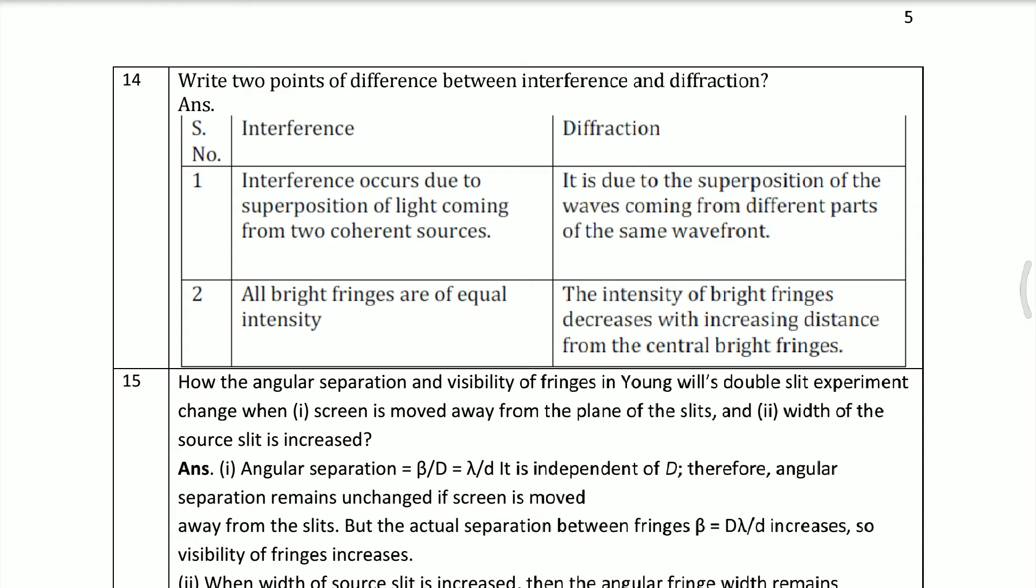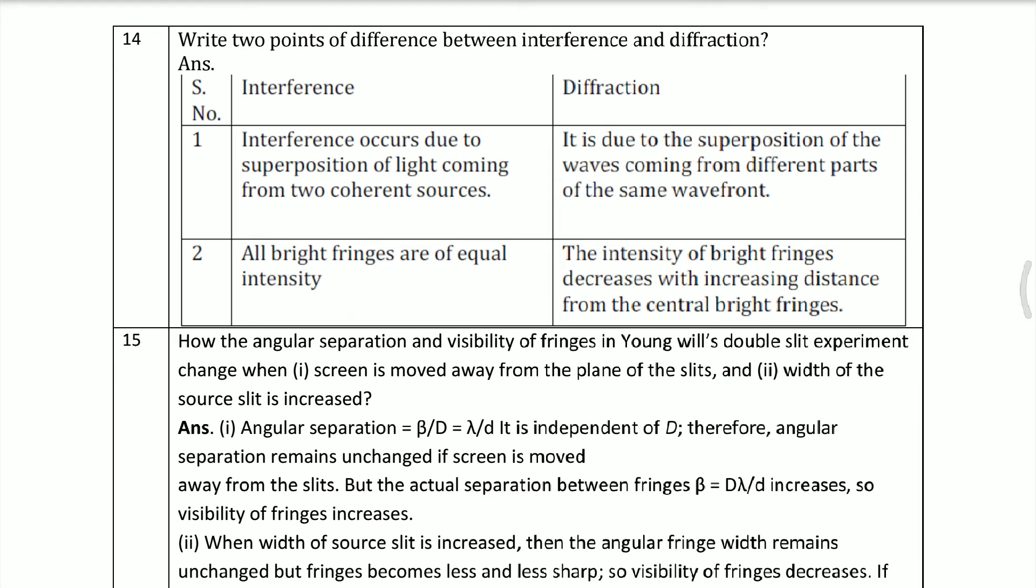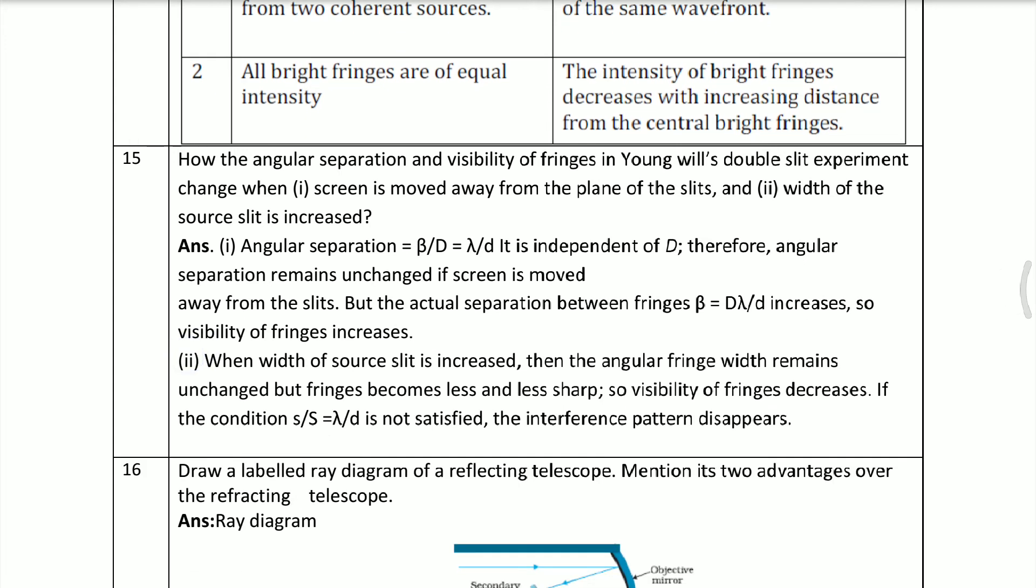Now, two marks questions include differences. In your book there are a lot of differences. Difference between interference and diffraction: Interference is due to superposition of light coming from two coherent sources, while diffraction is due to superposition of waves coming from different parts of same wavefront. Main difference is same wavefront. In interference, all bright fringes are of equal intensity. In diffraction, the intensity of bright fringes decreases with increased distance from the central bright fringes.